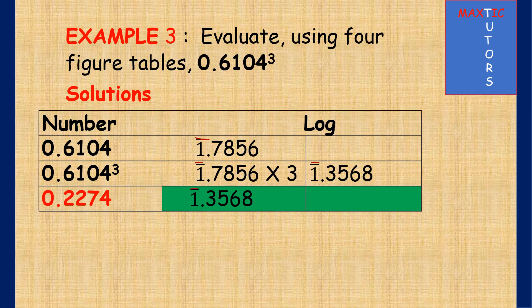And the antilog of that is what? 35 under 6 difference 8 will give you 2274. And because it is bar 1 which is 1 zero, so you put 0 here. So it becomes 0.2274.